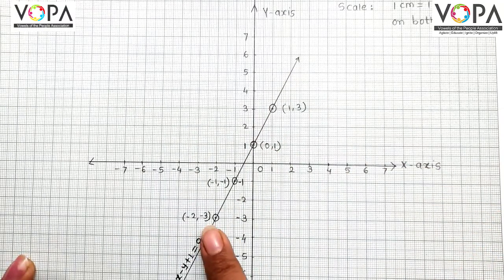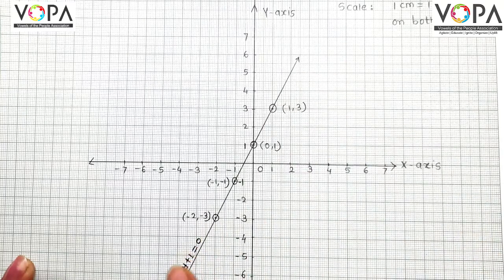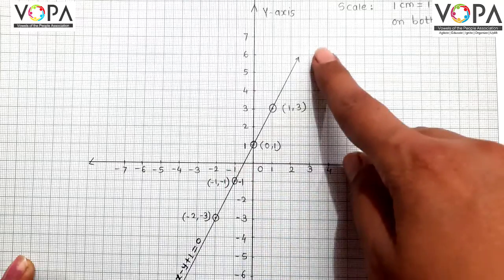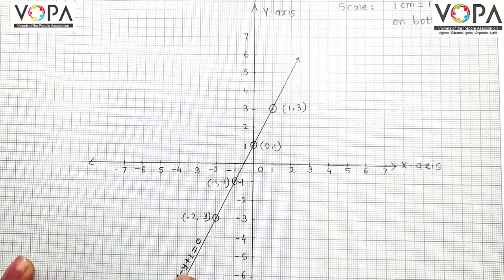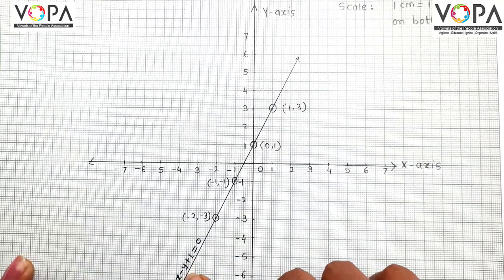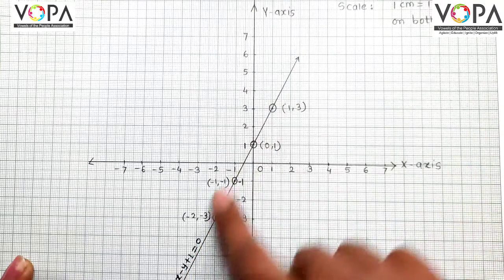These are the 4 points, and the points are collinear. Draw the line through these points. Then we get the equation of line 2x minus y plus 1 equal to 0.